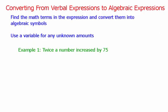We're going to start by converting from a verbal expression to an algebraic expression. The key in turning a verbal expression into an algebraic expression is finding the math terms in the expression and converting them into algebraic symbols. This is where that table you just made is going to come in very handy. We're going to use a variable for any unknown amounts — anytime we don't know what a number is, we're going to use a variable to stand in for it.